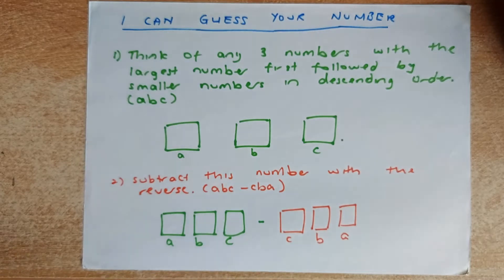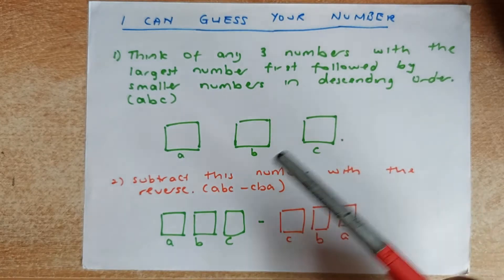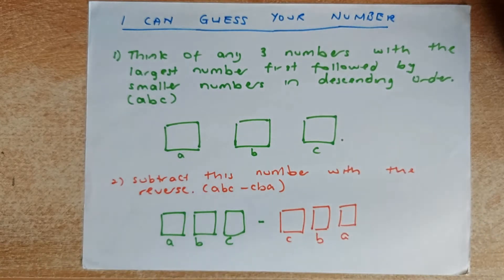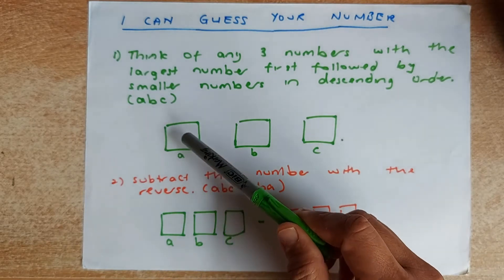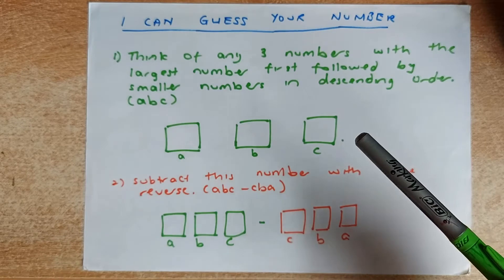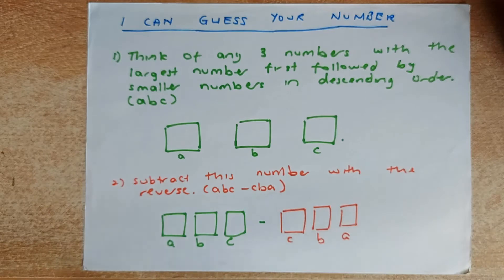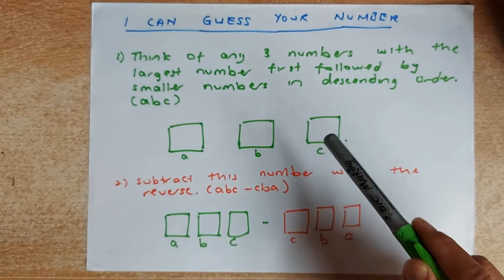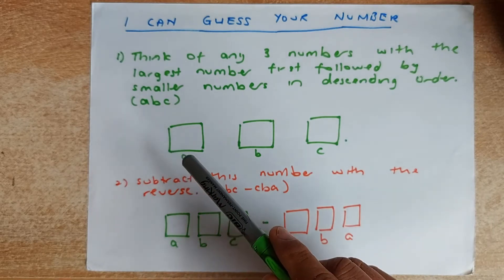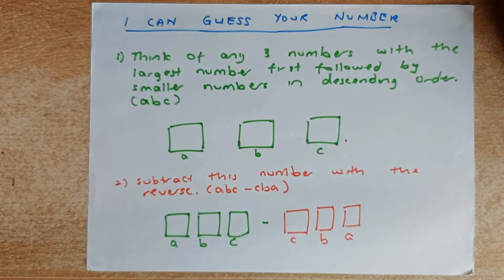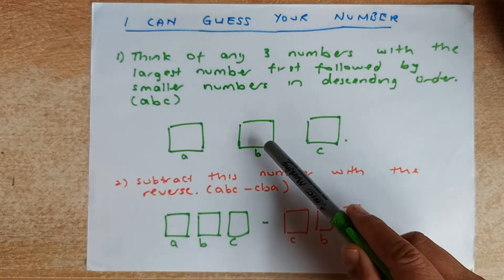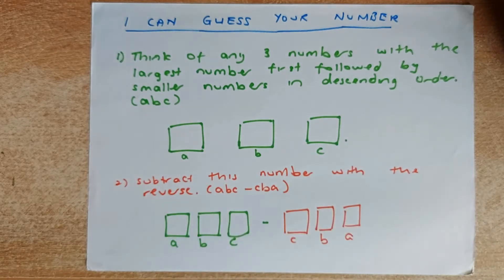First, I want you to think of any three numbers with the largest number first, followed by smaller numbers in descending order. Descending order means you take the biggest to the smallest. Try not to use the same number. So the biggest number should be A, the smallest number should be C, and B will be somewhere between A and C. For example, if you choose 321, that is acceptable. If you choose 741, that is also acceptable. Write it down on a piece of paper and choose your number.